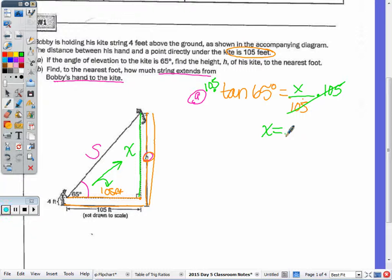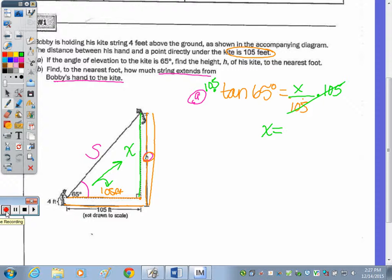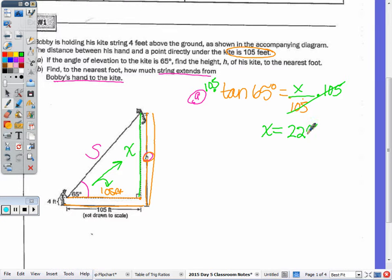So 105 times the tangent of 65. So X is equal to 225.1732267. Now, H, if I highlight what I just found in this segment here, I just found from here to here. I need that gap, that missing part, for the total height. What is that missing part? Sean? Four feet. It comes from over here. So I just need to add four, and we'll have our final answer. So 229.1732267.